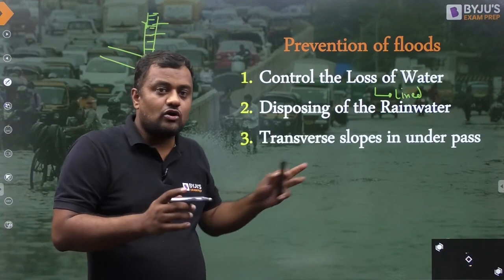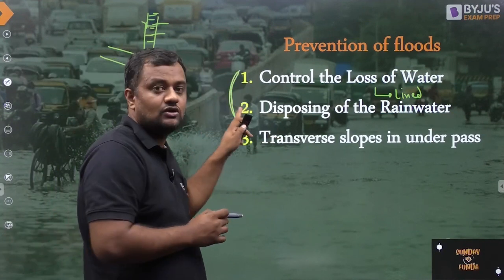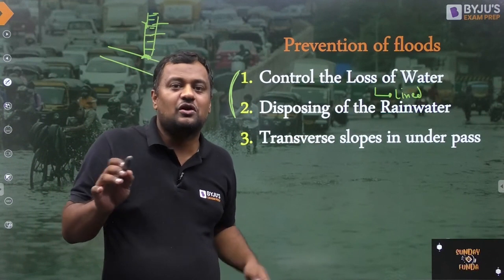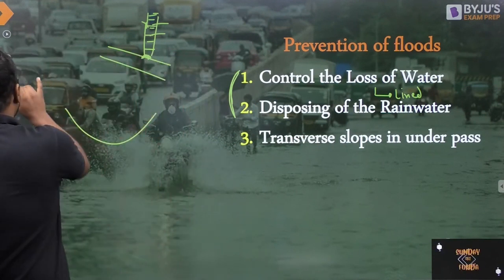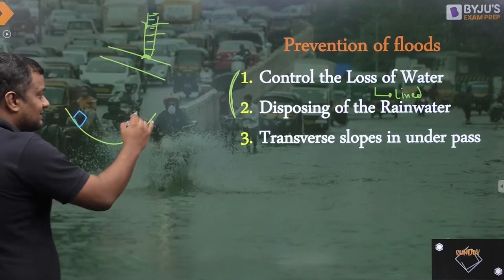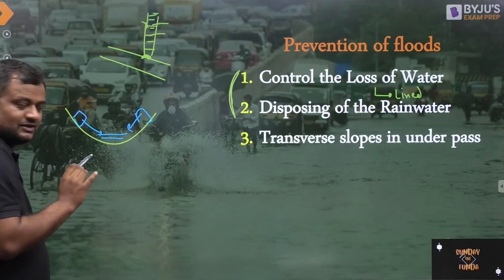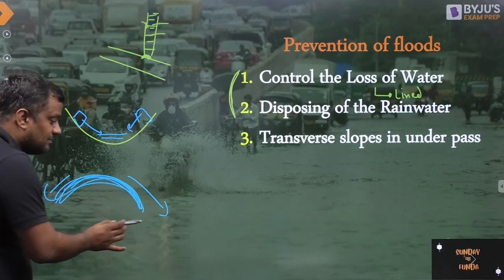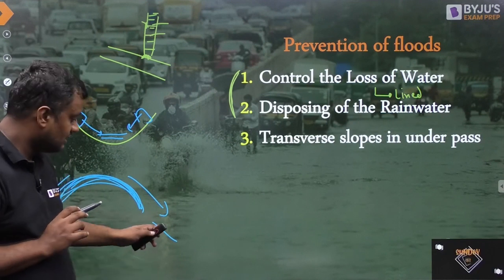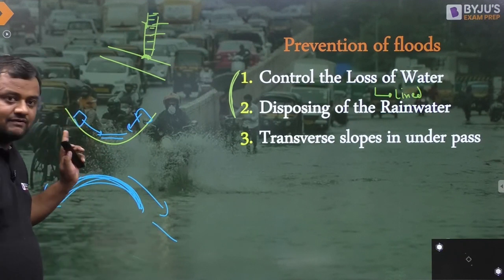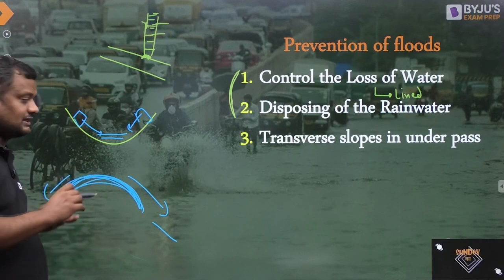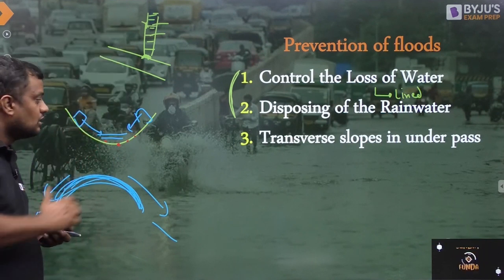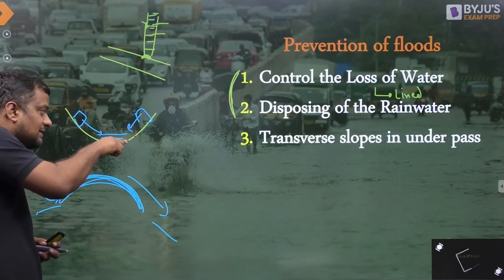Now considering the underpass specifically — a long longitudinal slope will not help here because an underpass shape means water accumulates at the bottom. Flyovers are much better since water drains off to either side. For underpasses, proper transverse slope should be provided along with drains, so that water flows toward those drains effectively.